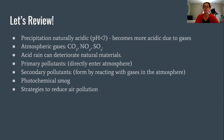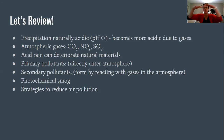So let's review: precipitation is naturally acidic with a pH less than 7, but it can become more acidic due to atmospheric gases or contaminants — carbon dioxide, nitrogen oxides, and sulfur oxides. Acid rain can deteriorate natural materials. There are primary pollutants that directly enter the atmosphere and secondary pollutants that form by reacting with atmospheric gases. Photochemical smog is a temperature inversion issue where pollutants form a layer in the atmosphere. There are many strategies to reduce air pollution, which you'll think about in the next activities. If you have any questions, please feel free to reach out, and I hope you have a great week.